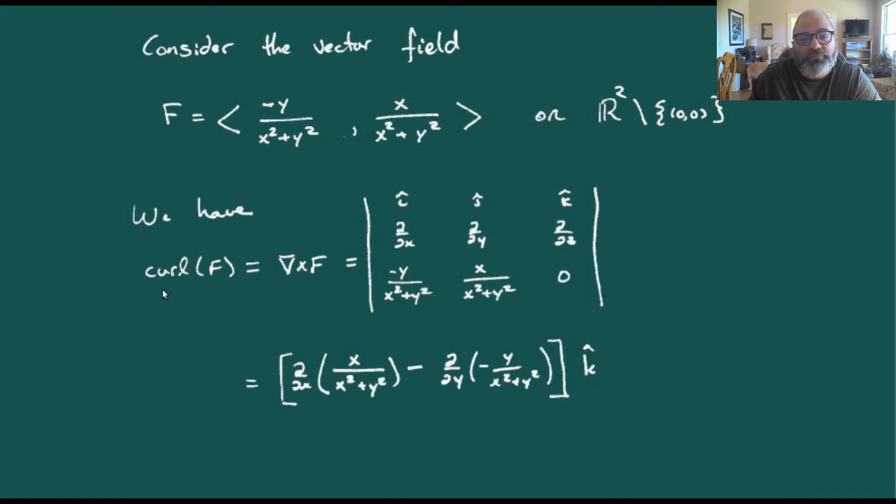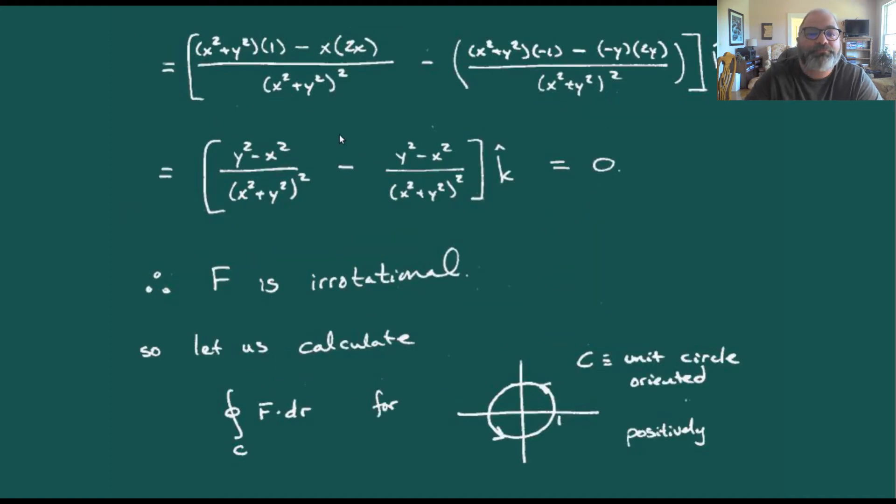If we compute the curl of this vector field, remembering what the curl looks like, it's just the partial with respect to x of the second component minus the partial with respect to y of the first component. Computing those, in each case we get y squared minus x squared over x squared plus y squared squared. Those cancel and we get a curl of zero, so this thing is irrotational.